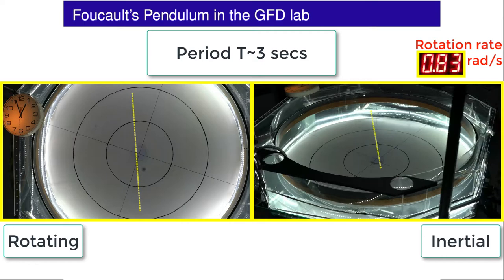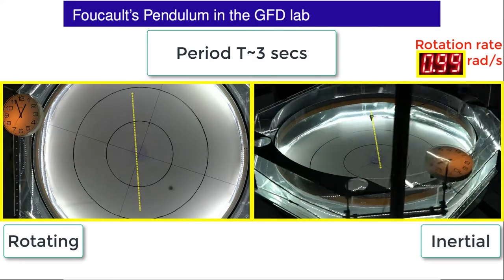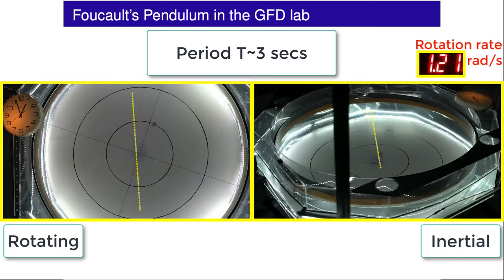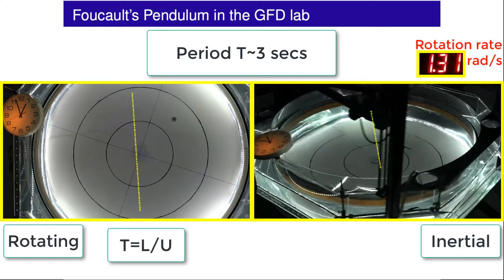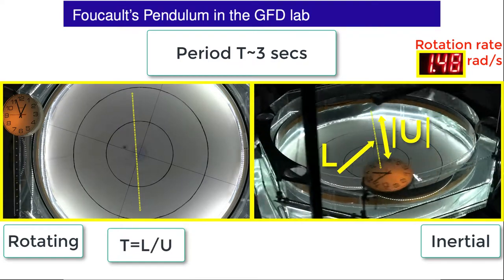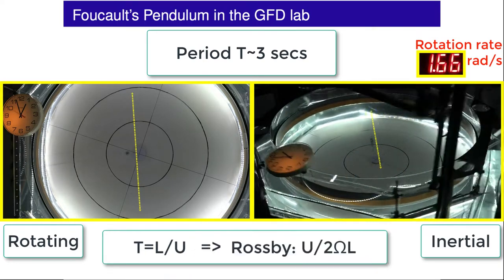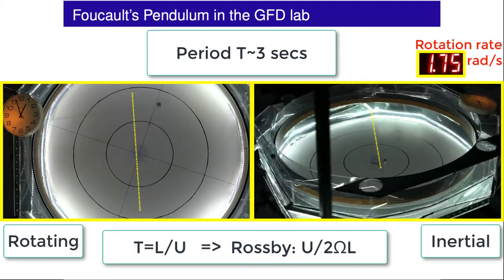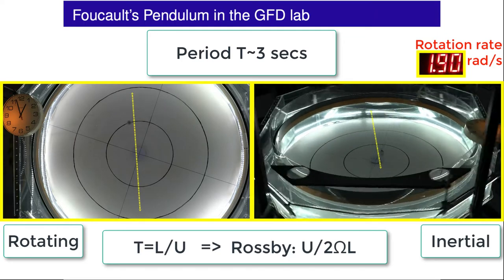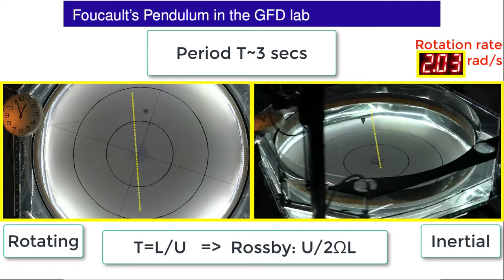This can be understood by considering the timescales. The rotation timescale is decreasing as the rotation rate is increasing, and it is becoming comparable to the inertial timescale, which is the period of the pendulum. If we write the period of the pendulum in terms of its path length L and its average speed U, we have T = L/U. As the ratio of the rotation timescale, 1 on 2Ω, to the pendulum timescale becomes small, the effect of rotation dominates on the pendulum's path in the rotating frame. Eventually we reach a point where the pendulum's path in the rotating frame is almost circular, apparently barely crossing the centre of the tank.